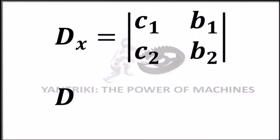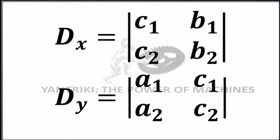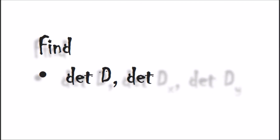Similarly, for Dx we ignore the coefficients of variable x, so the values for Dx will be [c1, b1; c2, b2]. And for Dy, we ignore the coefficients of variable y, so the values will be [a1, c1; a2, c2]. Once we have D, Dx, and Dy, we can proceed to calculate their determinants using the Sarrus Rule.